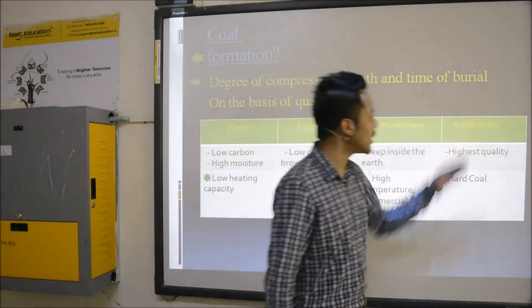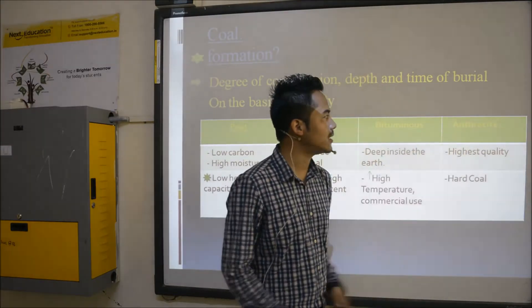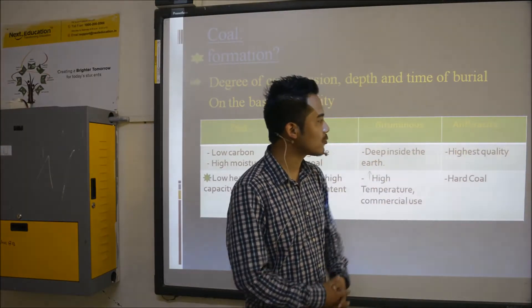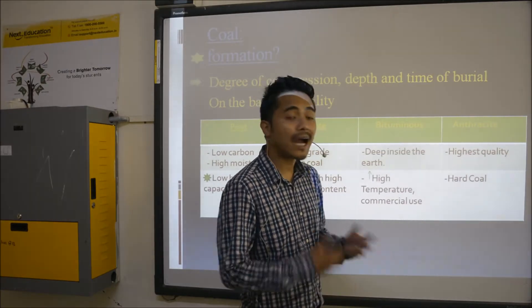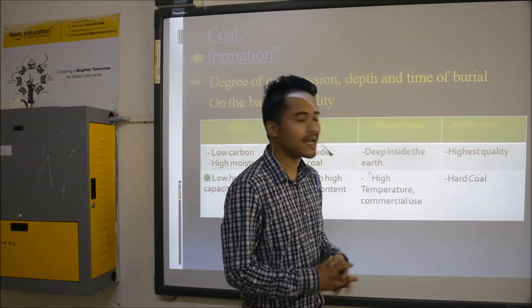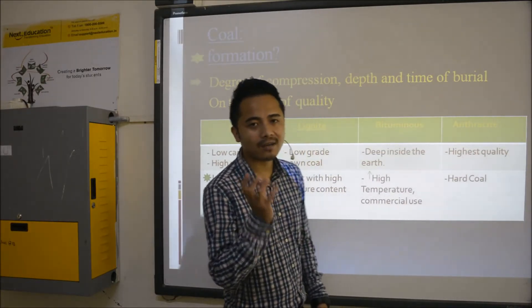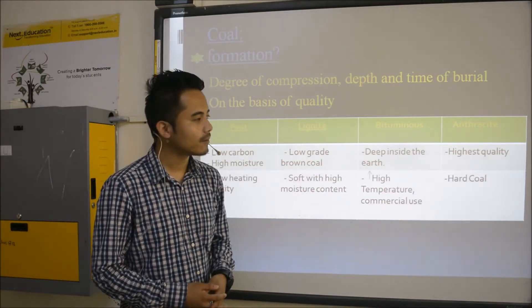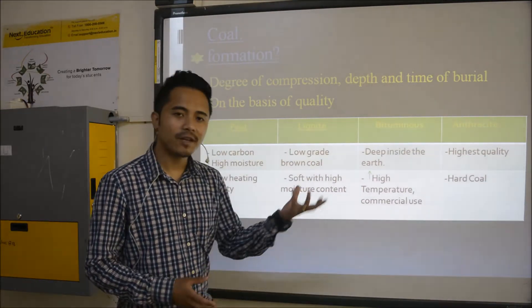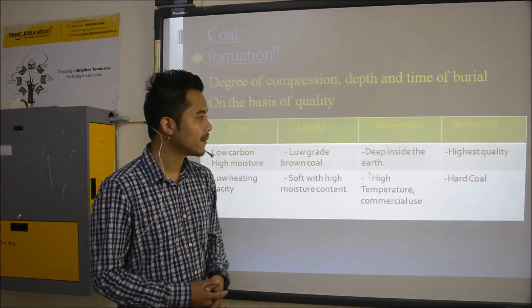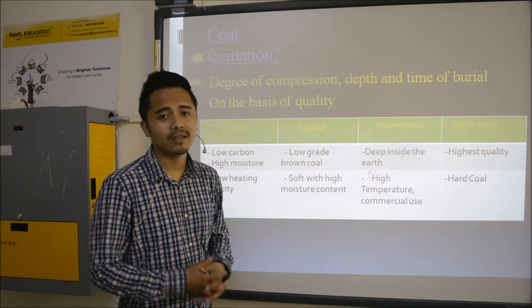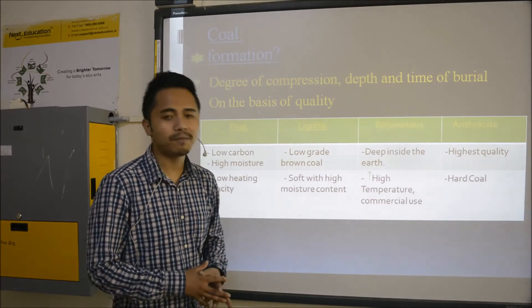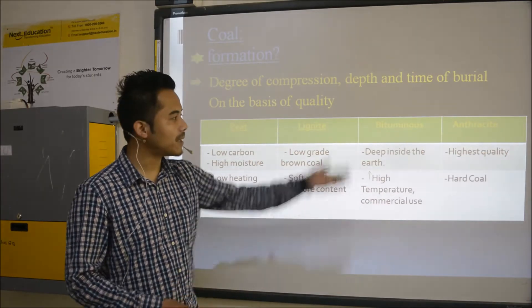Now let's come to the last category — anthracite. Anthracite has the highest quality coal. It is very hard coal, does not have any moisture with it. It is found very deep under the earth's crust. These are the topics you need to memorize.